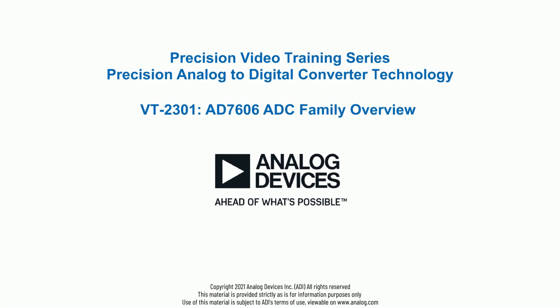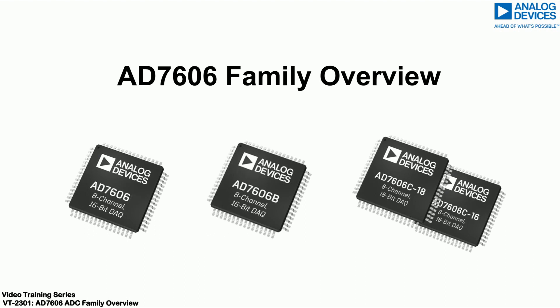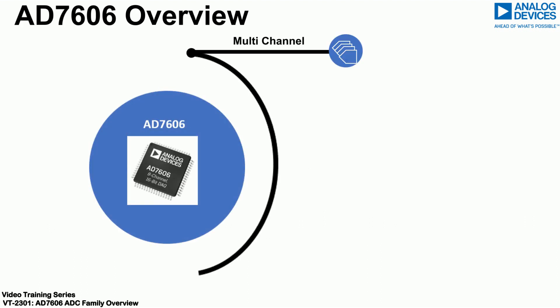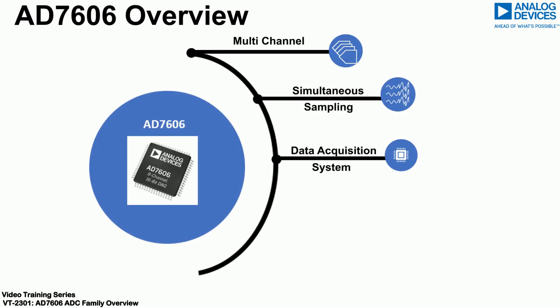Hello and welcome to the Analog Devices precision training video that focuses on precision analog to digital converter technology. Today we will bring you through the AD7606 family of ADCs. The AD7606 is a multi-channel simultaneous sampling data acquisition system based around a successive approximation register, SAR, ADC.